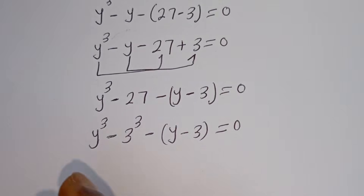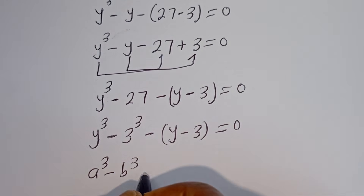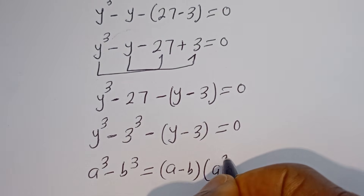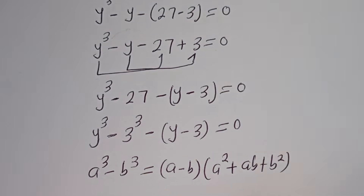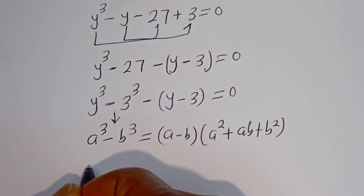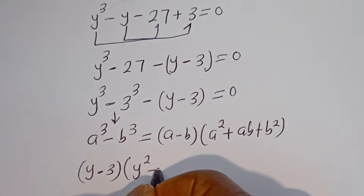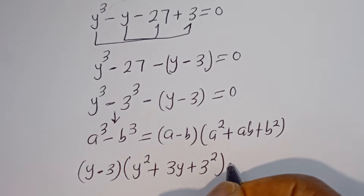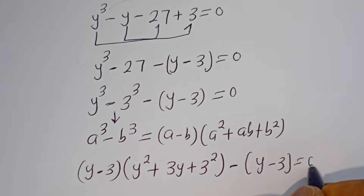Take note that if you have a to the power of 3 minus b to the power of 3, this is equal to a minus b, bracket a squared plus ab plus b squared. Then, this can be written as y minus 3, bracket y squared plus 3y plus 3 squared, minus y minus 3, is equal to 0.